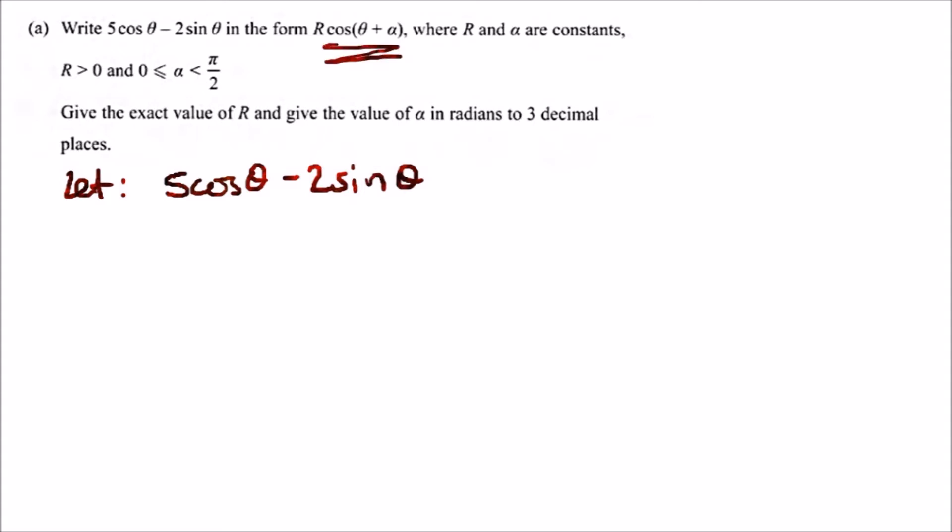It can be written as r(cos θ cos α - sin θ sin α). Now from here we're simply going to equate the coefficients. Notice on the left side we have cos θ and on the right we have cos θ, and likewise we have sin θ on both sides.